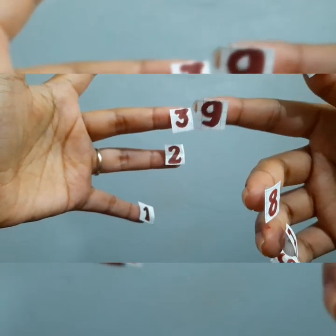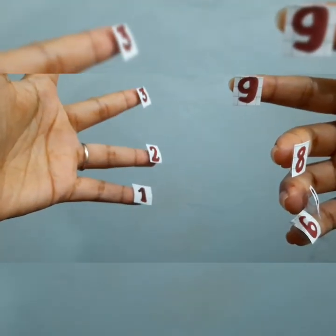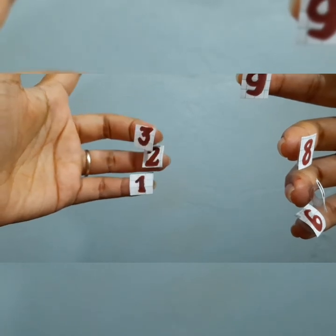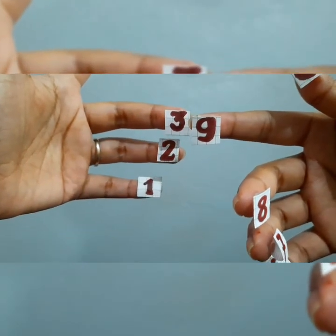How about 9 times 3? Add 9 more. 18, 27. So 9 times 3 equals 27.